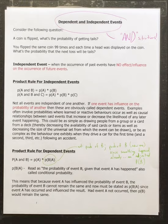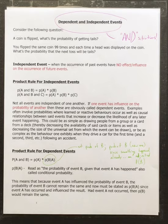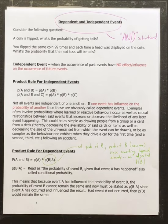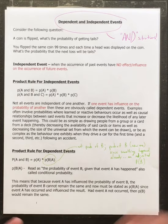With dependent events, what happens is the probability depends on what's happened beforehand. A dependent probability has a new adjusted probability the second time around, and then it's adjusted again the third and fourth time. A very good example is drawing cards from a deck — when you draw cards, there are fewer cards left, so the total possibilities decrease. It also depends on what the previous card was.